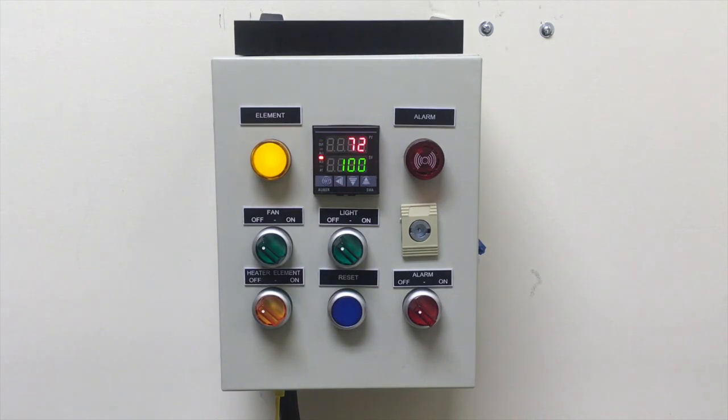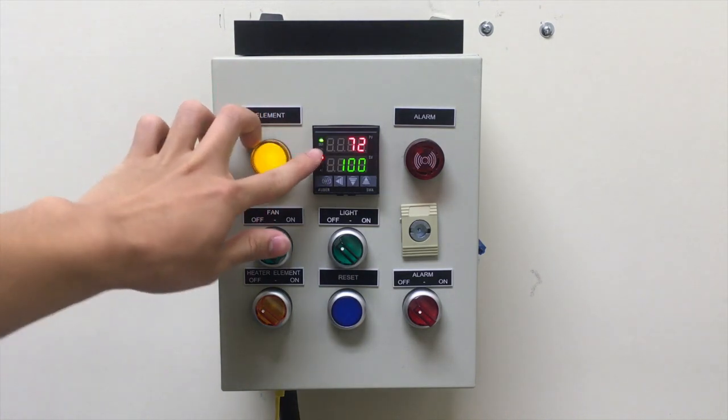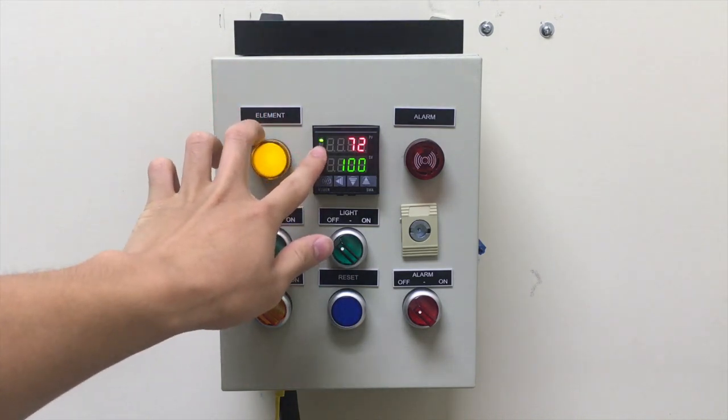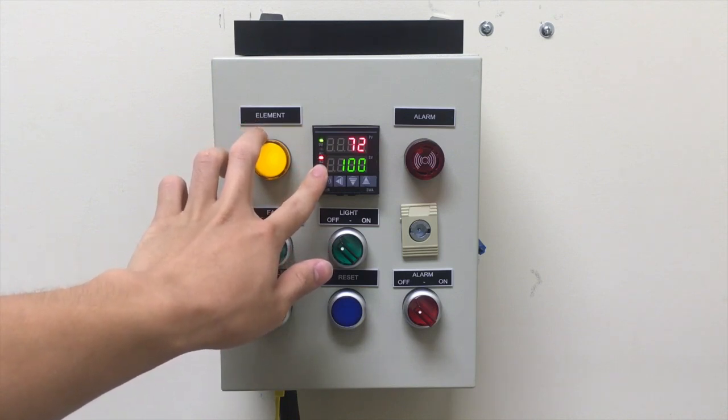Now these light indicators on the left simply read what is on or off. Your OUT indicator is on when your controller is giving power to your load. Below that is alarm one indicator, then alarm two indicator, and AT is the auto tune indicator.